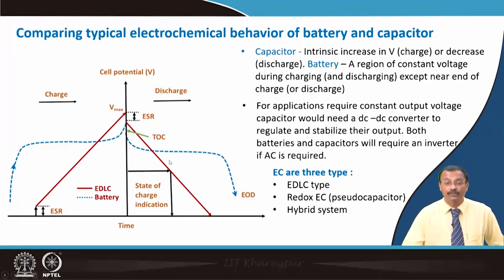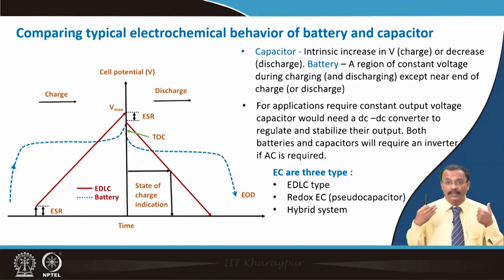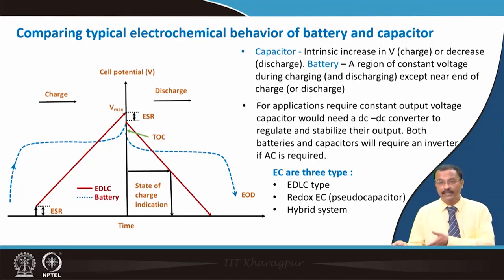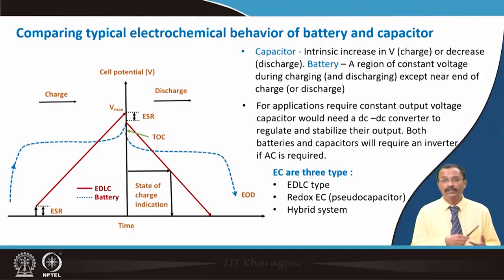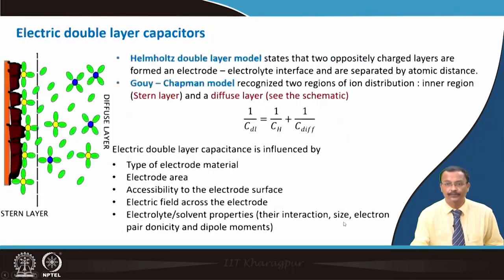For applications requiring constant output voltage, a capacitor would certainly need a DC-DC converter to regulate and stabilize its output. Both batteries and capacitors will require an inverter if AC conversion is needed. Electrochemical capacitors are of three types: electric double layer type, redox electrochemical capacitor (also termed pseudocapacitor), and hybrid systems.